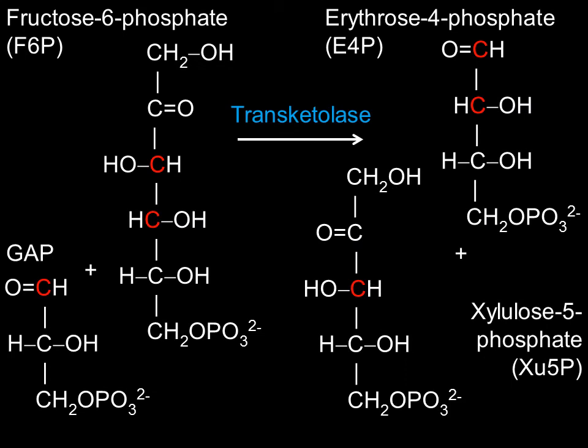Transketolase will now transfer the first two carbons from fructose-6-phosphate to one of the remaining glyceraldehyde-3-phosphates. This will generate erythrose-4-phosphate and xylulose-5-phosphate.